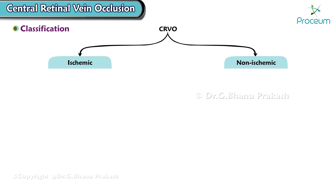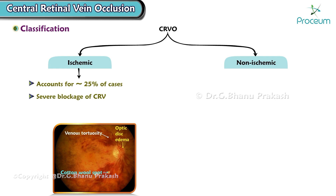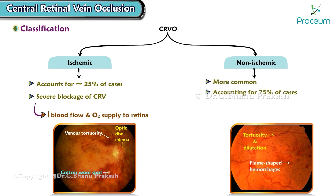Ischemic central retinal vein occlusion accounts for approximately 25% of cases. It's characterized by a severe blockage of the central retinal vein, leading to a significant reduction in blood flow and oxygen supply to the retina. Non-ischemic central retinal vein occlusion is more common, accounting for 75% of cases. In this type, the blockage is partial, allowing some blood flow to reach the retina.